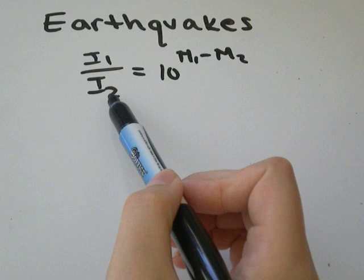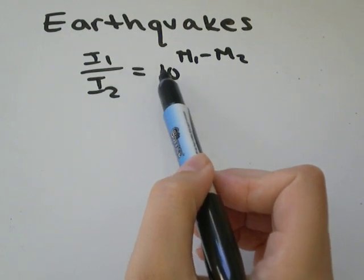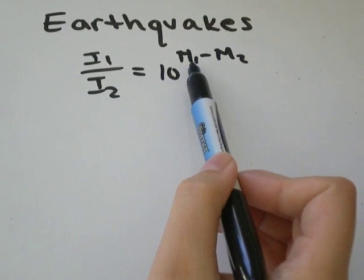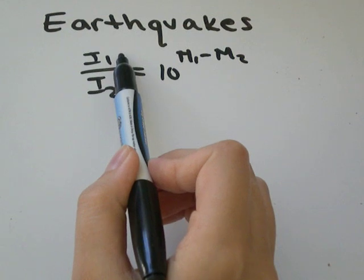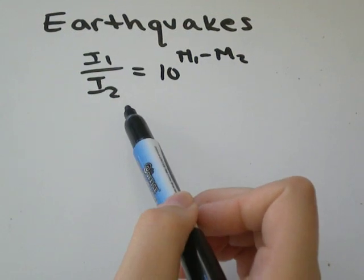is equal to 10 to the exponent of the magnitude of the first earthquake minus the magnitude of the second earthquake. Let's do an example to show you what it's all about.